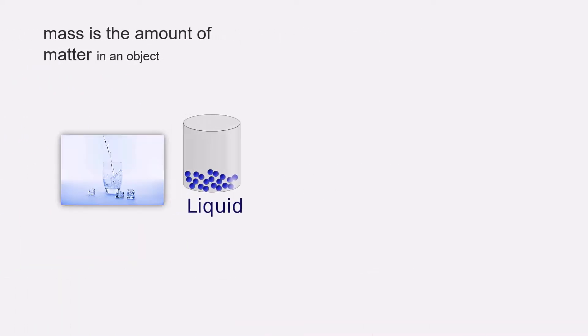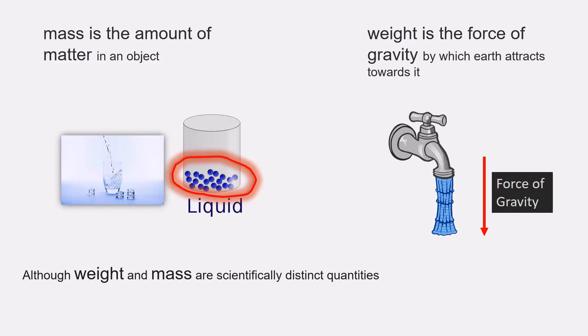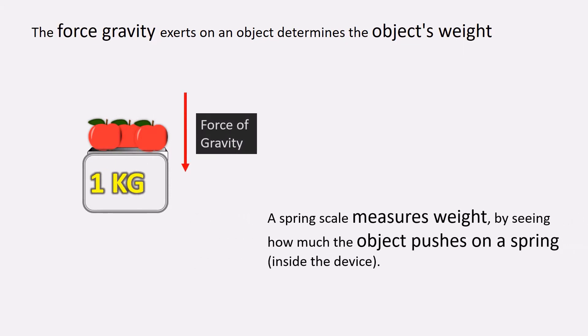Mass is the amount of matter in an object whereas weight is the force acting on an object due to gravity. Although weight and mass are scientifically distinct quantities, the terms are often confused with each other in everyday use. The force of gravity exerts on an object determines the object's weight. Here, a spring scale measures weight by seeing how much the object pushes on a spring inside the device.